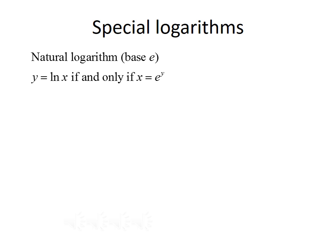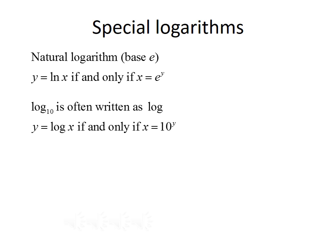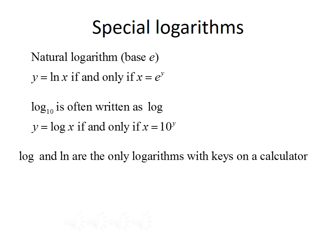Let's talk about some special logarithms. First, the natural logarithm is the logarithm with base e, written ln x. So y equals ln x if and only if x equals e to the y. Second, the logarithm with base 10 is often written simply as log, where the 10 is understood. So y equals log of x if and only if x equals 10 to the y. Log base 10 and the natural log are extremely important because they're the only logarithms that have keys on the calculator.